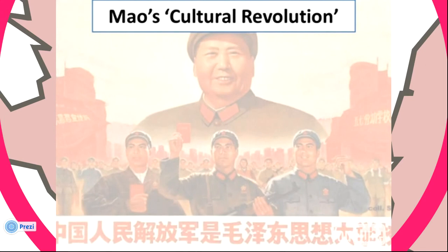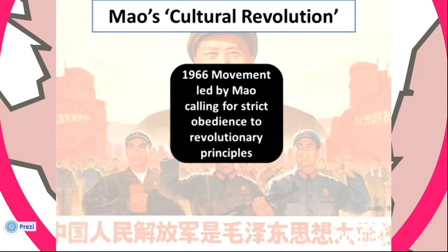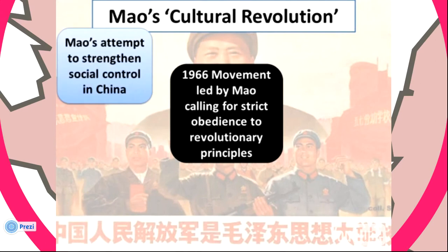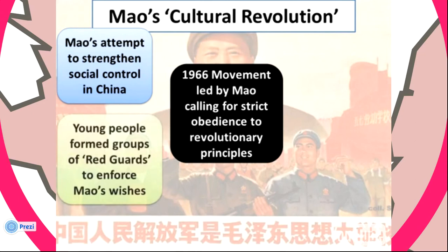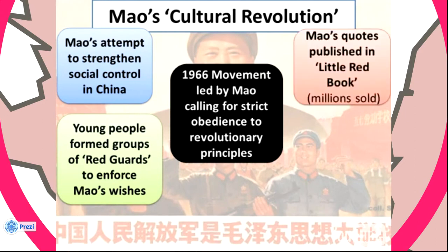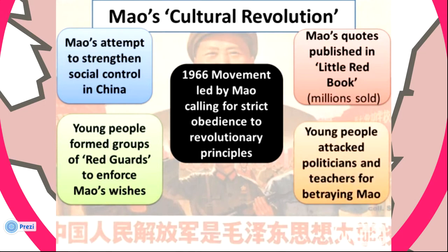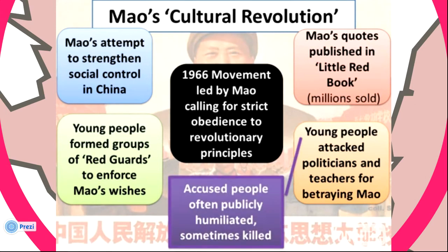After the failure of the Great Leap Forward, Chairman Mao launched the Cultural Revolution — a 1966 movement calling for strict obedience to revolutionary principles, meaning strict obedience to Mao's teachings. Young people formed groups called the Red Guards, enforcing Mao's wishes. Mao's quotes were published in the Little Red Book, which nearly every child carried. Young people attacked politicians and teachers for betraying Chairman Mao, and those accused were often publicly humiliated and sometimes killed.